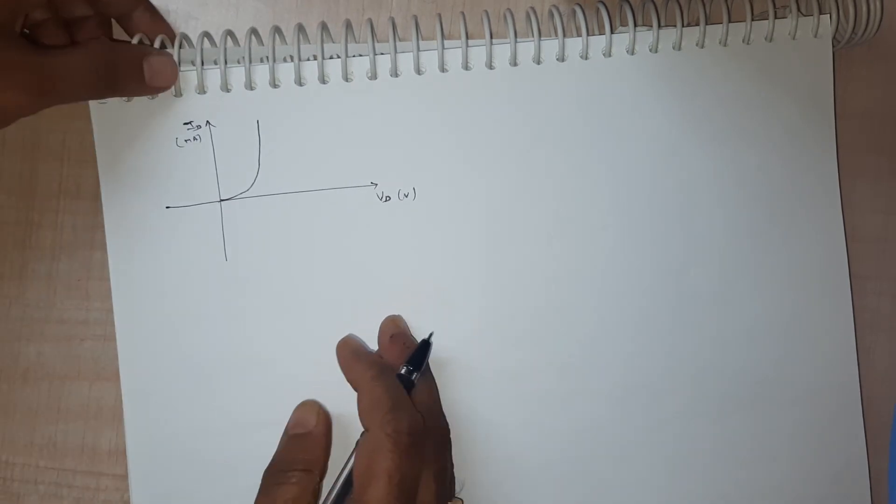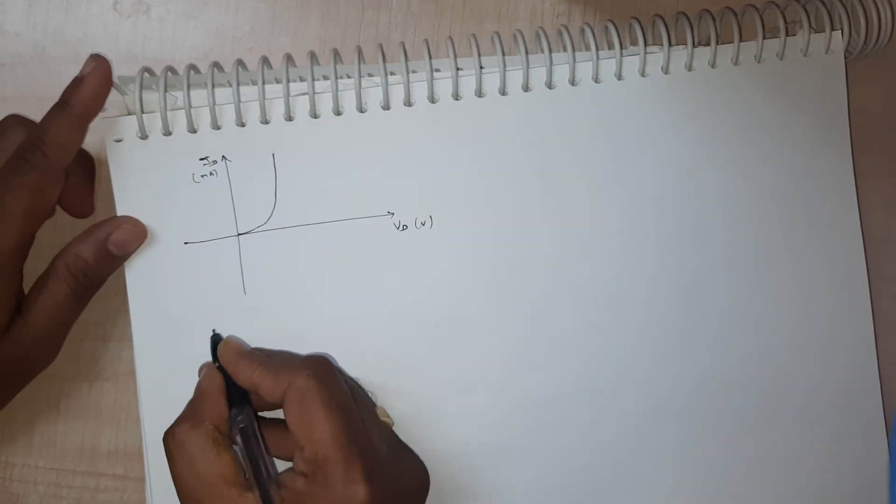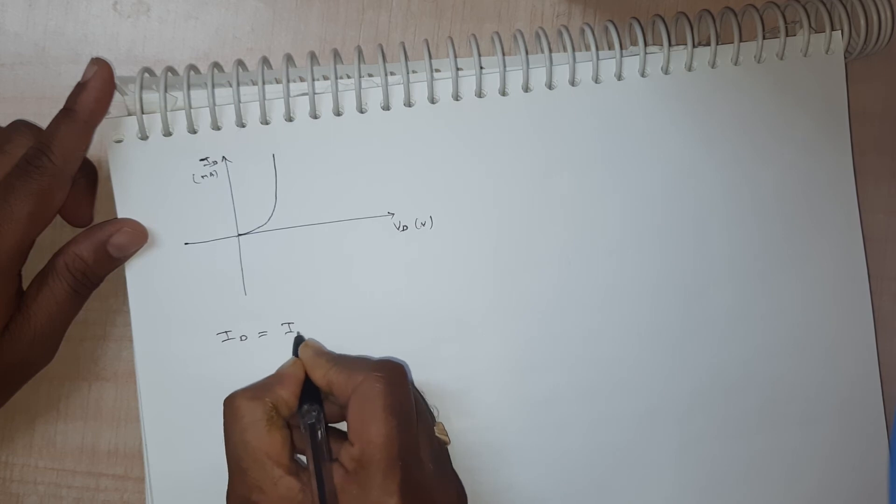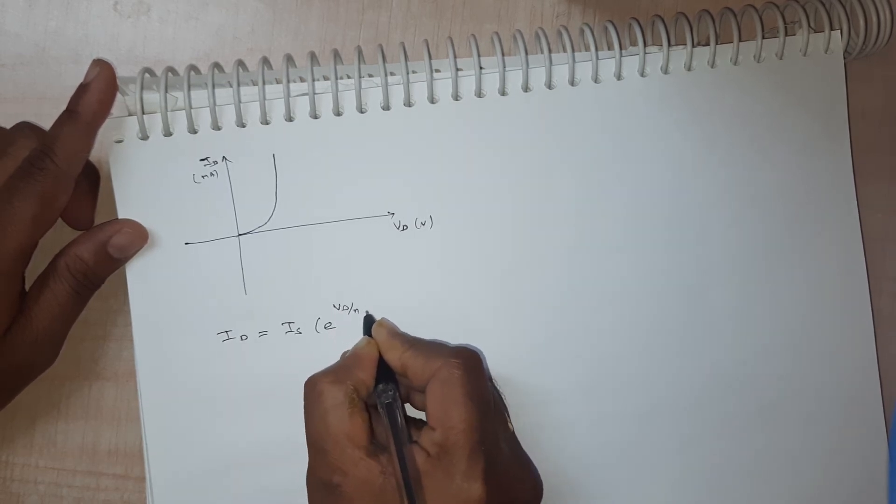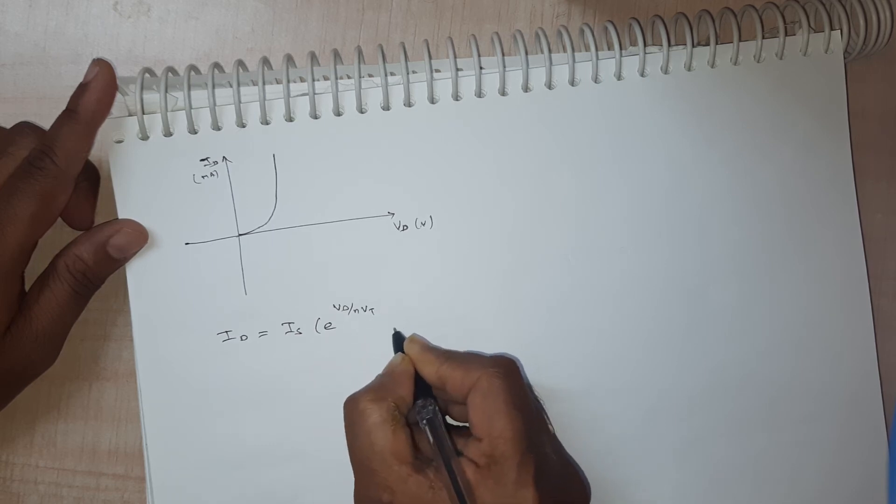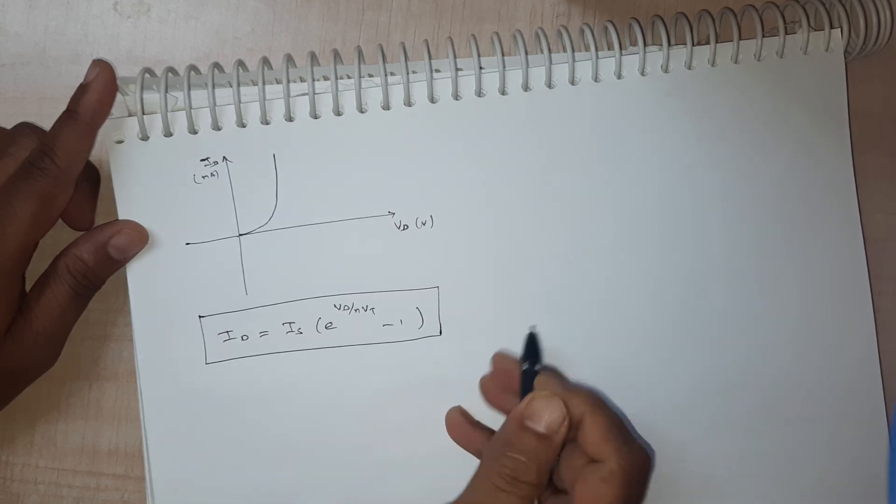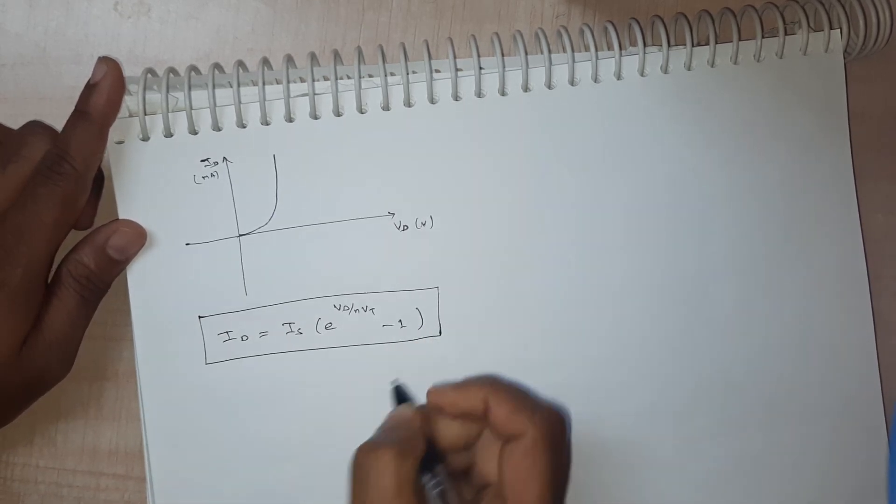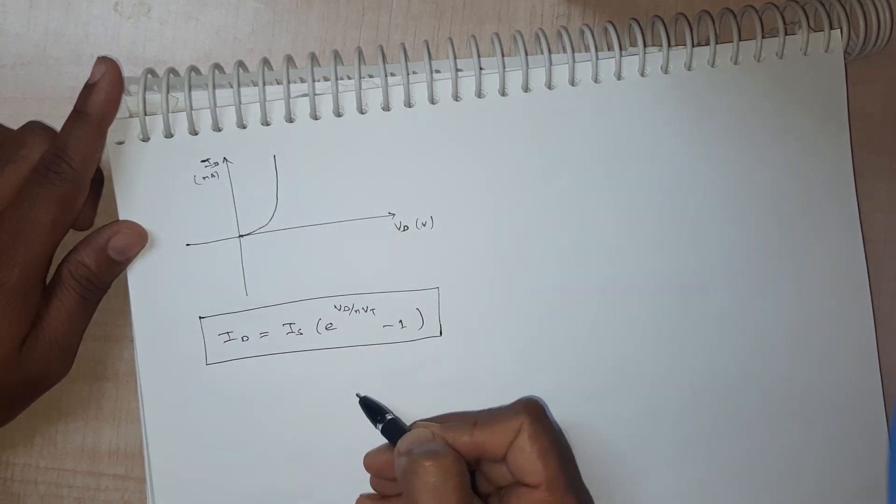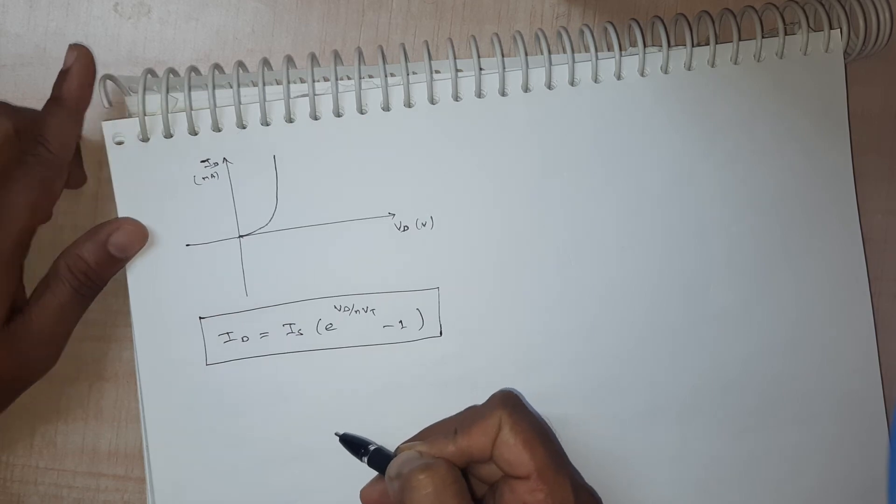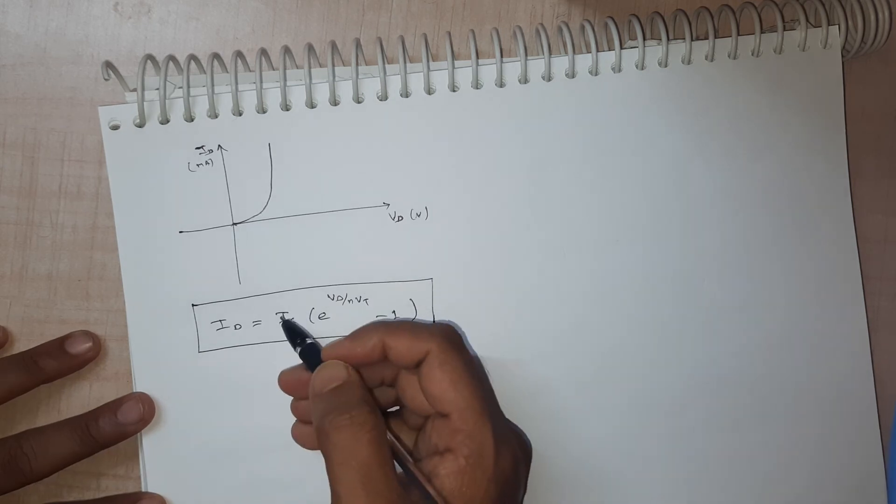And that's why we have the diode current as id equal to is into e to power vd by nvt minus one, which was explained just a few minutes before. Since this curve is exponential, this is how the equation is derived. As I mentioned earlier you can refer to various texts on how this equation is derived. Now this threshold voltage...